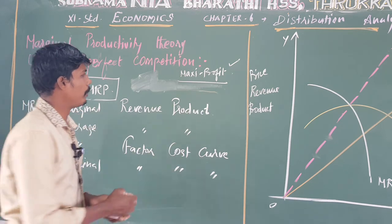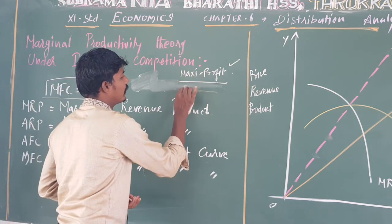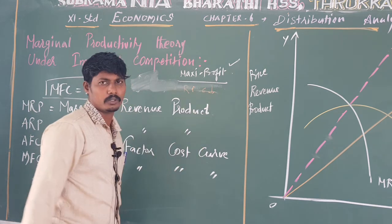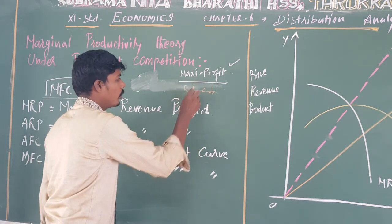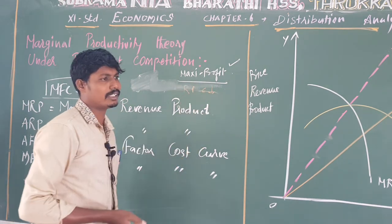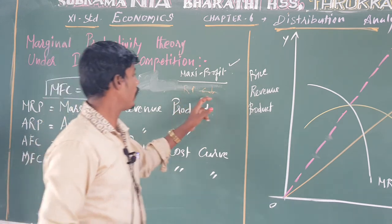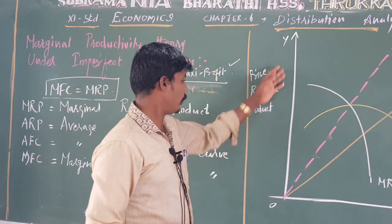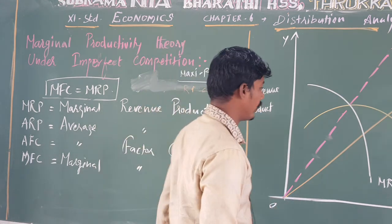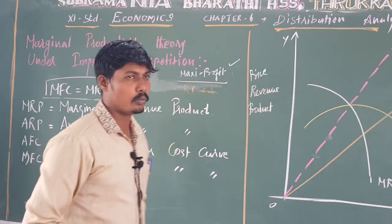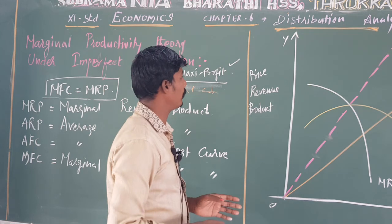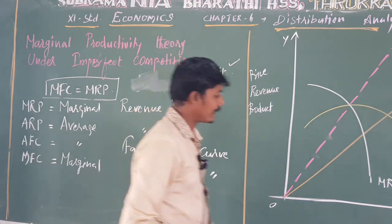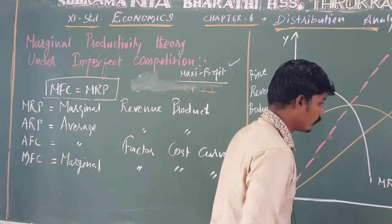If you look at the maximum profit, the revenue is more than the cost. If you look at the loss situation, the cost is more than the revenue. The Y-axis and X-axis are two categories. The Y-axis represents price, revenue, and product. The X-axis represents factor units.